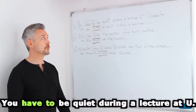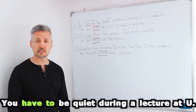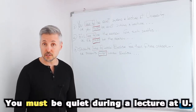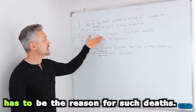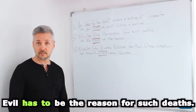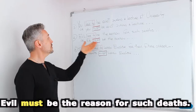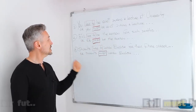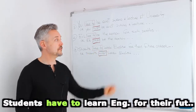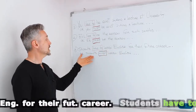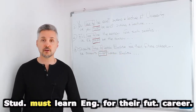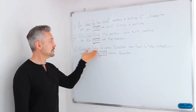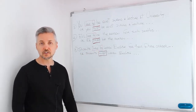You have to be quiet during a lecture at university. Or, you must be quiet during a lecture at university. Evil has to be the reason for such deaths. Or, evil must be the reason for such deaths. Students have to learn English for their future career. Or, students must learn English for their future career. In this lesson, we're going to look at the difference between 'have to' and 'must,' so stay tuned.